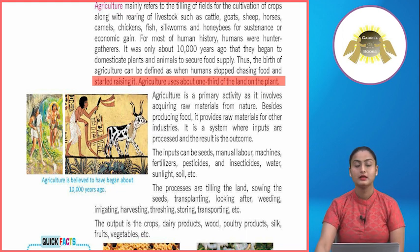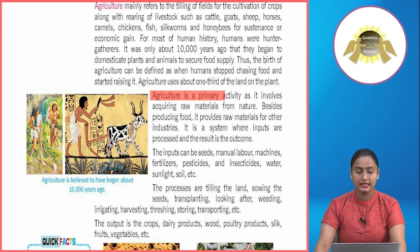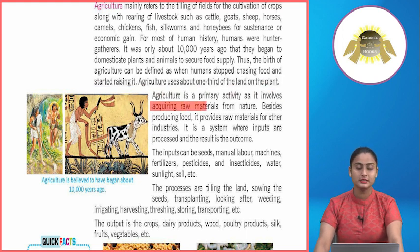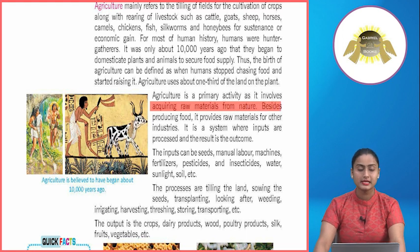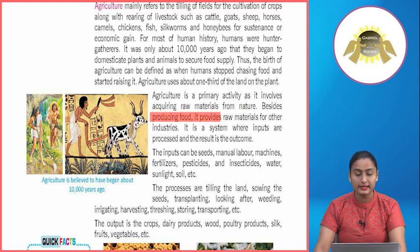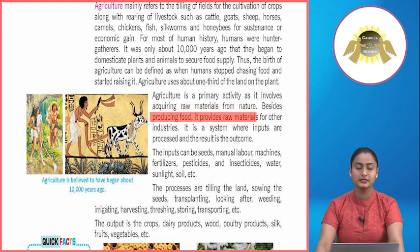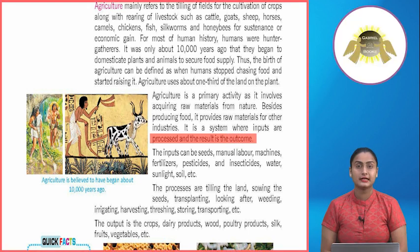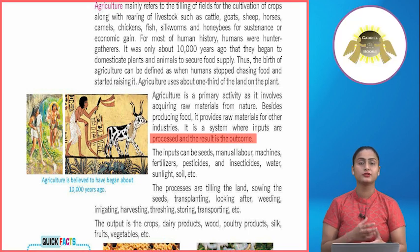For most of human history, humans were hunter-gatherers. It was only about ten thousand years ago that they began to domesticate plants and animals to secure food supply. Thus the birth of agriculture can be defined as when humans stopped chasing food and started raising it. Agriculture uses about one third of the land on the planet. It is a primary activity as it involves acquiring raw materials from nature. Besides producing food, it provides raw materials for other industries.